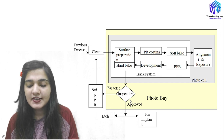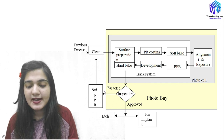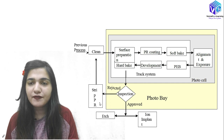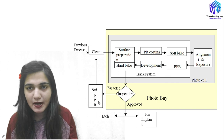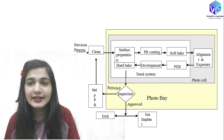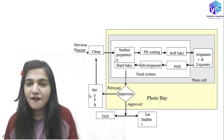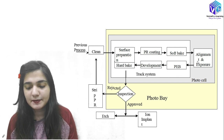After inspection, if the wafer is approved it will go for ion implantation or the etching step. Otherwise, if it is rejected, we strip off the photoresist layer and send the wafer back to the cleaning stage, after which all of the steps will repeat.